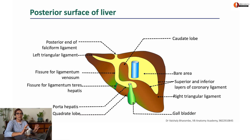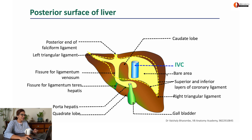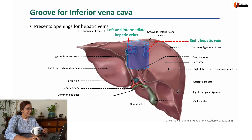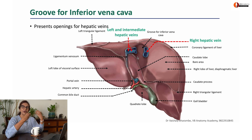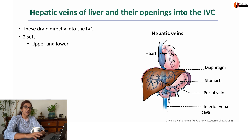Let's now look at the liver from behind, bound by superior border and inferior border. Here in the middle of the posterior surface is your inferior vena cava, which is where I want you to come. So this is your inferior vena cava. When you remove it, you find that hepatic veins were draining into it.